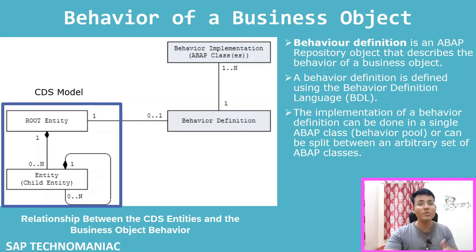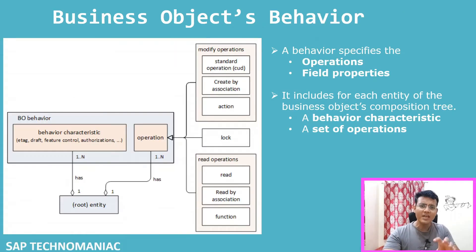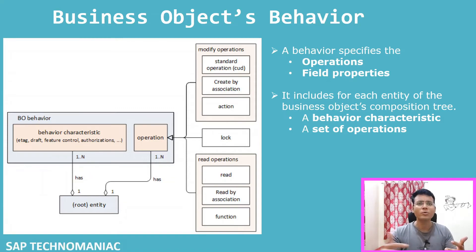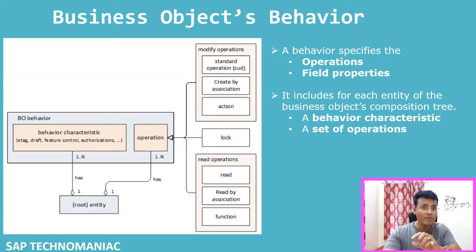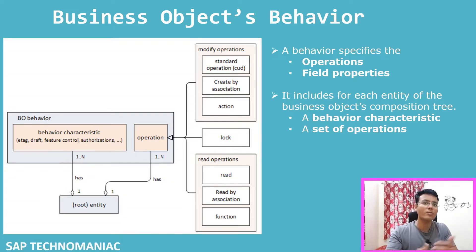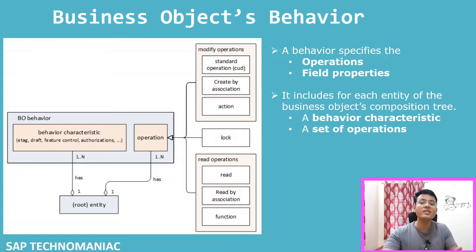In the behavior definition object, we define two things: operations and field properties. Field properties include things like making a field read-only or mandatory. For example, if you create a front-end application and a particular field should not be modifiable in edit mode, you mark it as read-only in the behavior definition, and it will automatically become non-modifiable in the front end. Similarly, you can mark fields as mandatory.